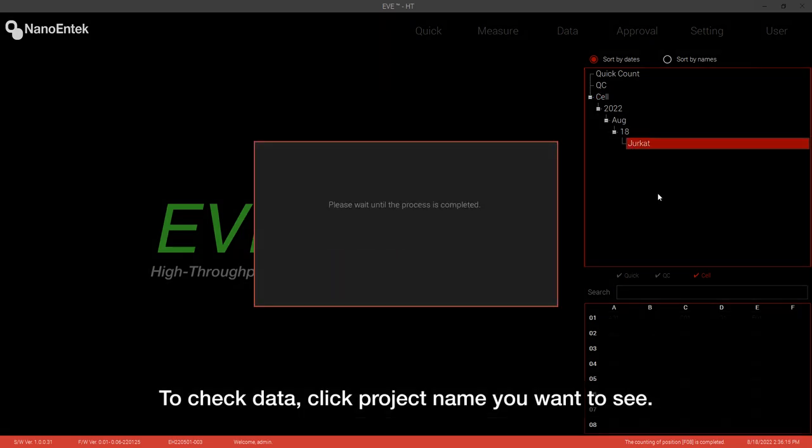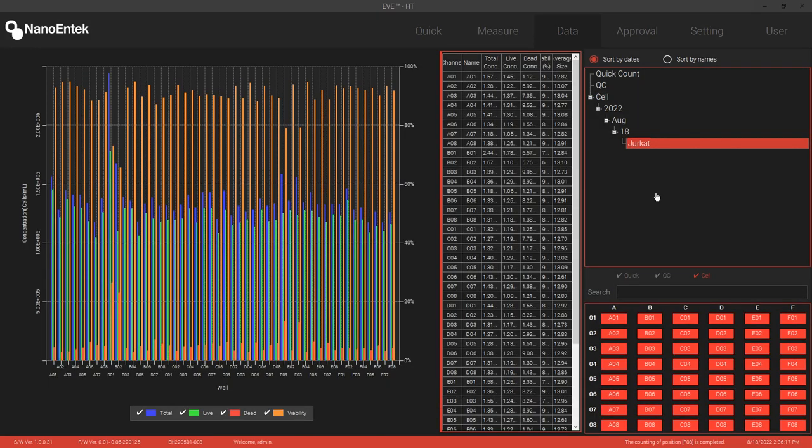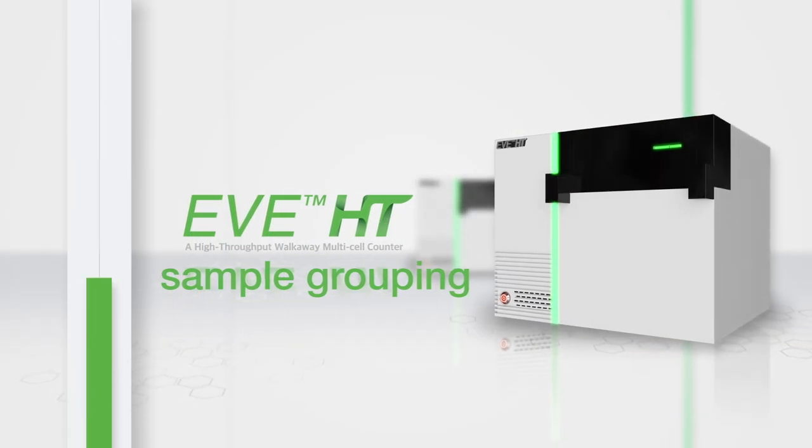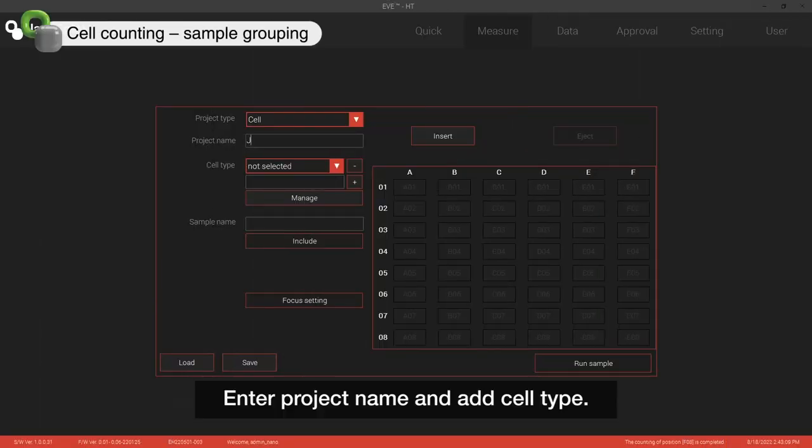To check data, click Project Name you want to see. See this section when using more than one sample type. Enter Project Name and add cell type.